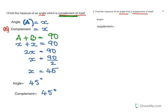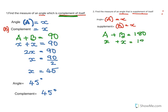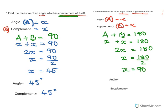Let angle A equal X and its supplement B also equal X, because the angle and its supplement are equal. For supplementary angles, A plus B equals 180, which means X plus X equals 180, so 2X equals 180 and X equals 90. The angle is 90 degrees and its supplement is also 90 degrees.